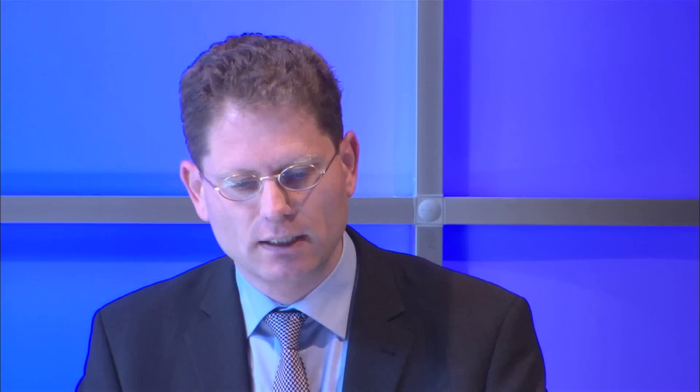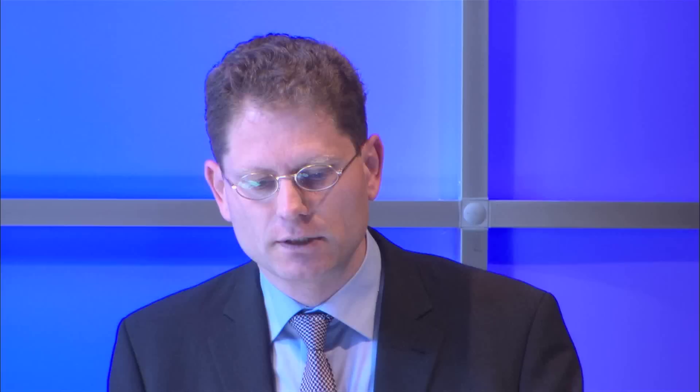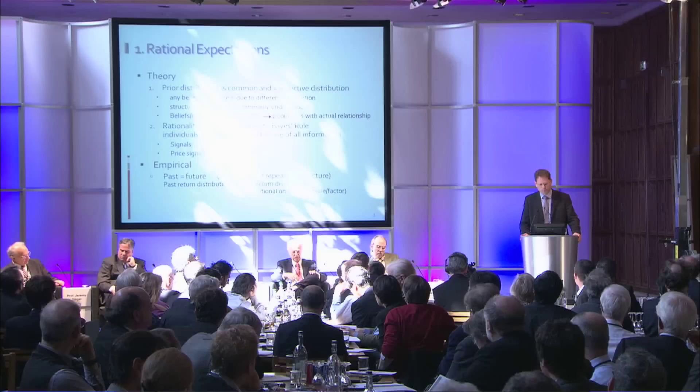Let me first outline a more theoretical, more abstract view of what rational expectations are, because it's closely linked to the efficient market hypothesis. Rational expectations has two elements. One is that we start with a prior distribution which is common among all of us — the same prior distribution — and this prior distribution is also equal to the objective distribution. If we have different beliefs, it's always only because we got different signals.